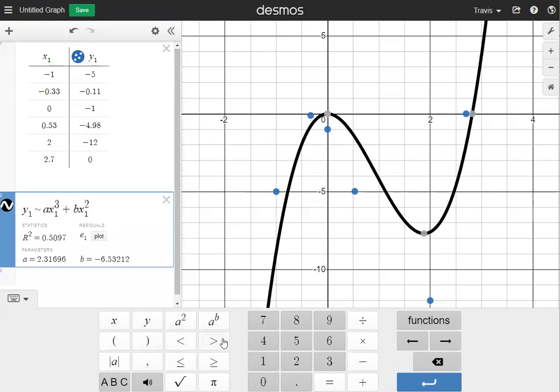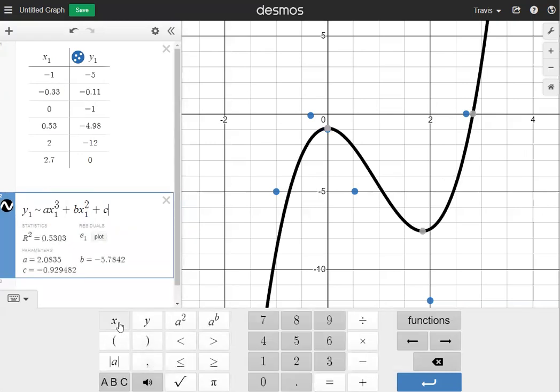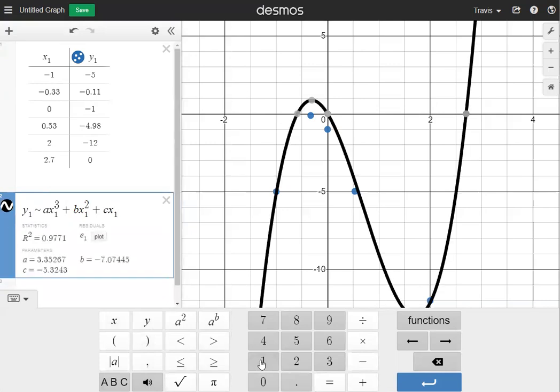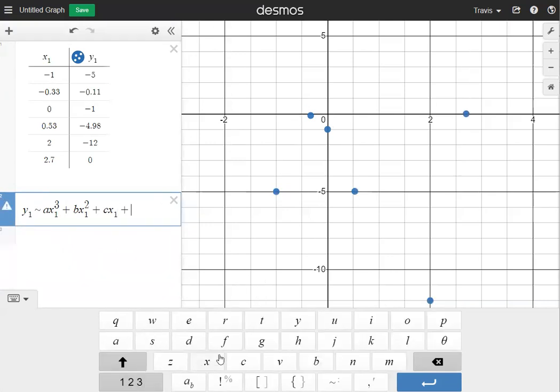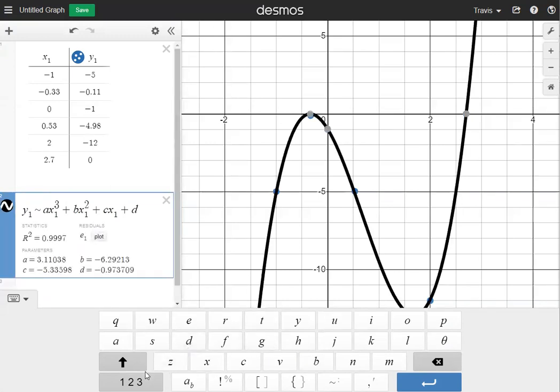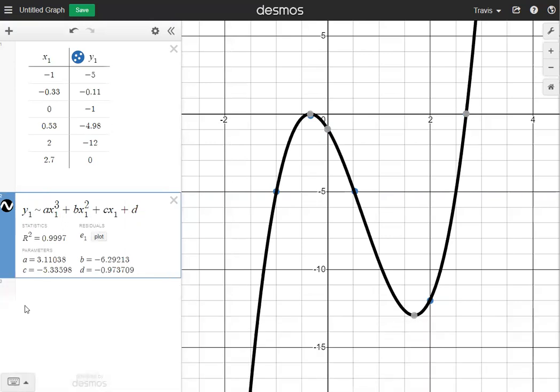The next thing I'm going to do is add cx. So I'm going to click add, cx1. And then the last thing I need is my plus d. So I'm going to hit plus and then go to the abc menu to grab the d. So now I have my cubic regression equation: ax cubed plus bx squared plus cx plus d. My highest exponent is 3 and that's what makes it a cubic regression.